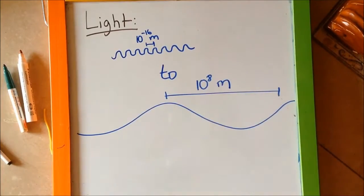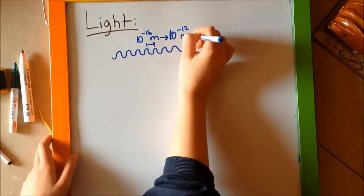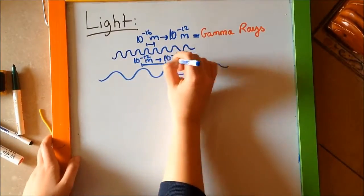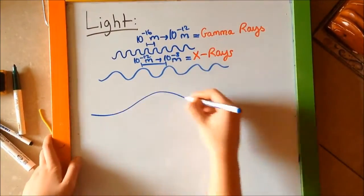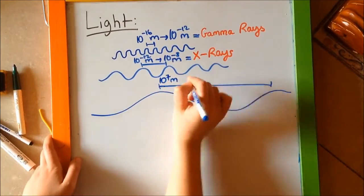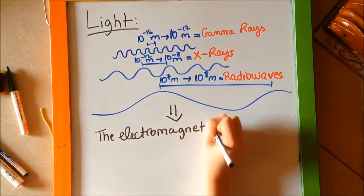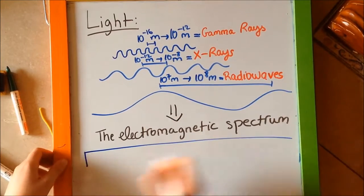And to each wavelength, a color is attributed. As you can see, lights that have wavelength from 10 to minus 16 meters to 10 to minus 12 meters are called gamma rays. Lights that have wavelength from 10 to 7 meters to 10 to 8 meters are called radio waves, and so on. This classification is what gives us the electromagnetic spectrum.